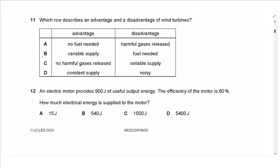Question 11: Which row describes an advantage and a disadvantage of wind turbines? No fuel needed is an advantage. Variable supply is a disadvantage (not a constant supply). No harmful gases released is an advantage. The correct combination includes 'no fuel needed' as advantage and 'variable supply / noisy' as disadvantage. Answer is C.